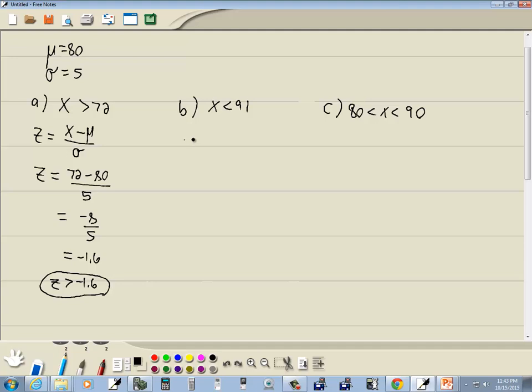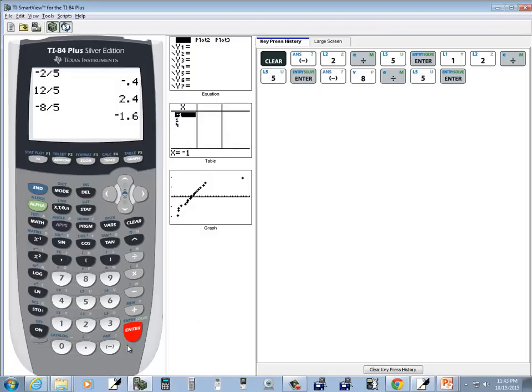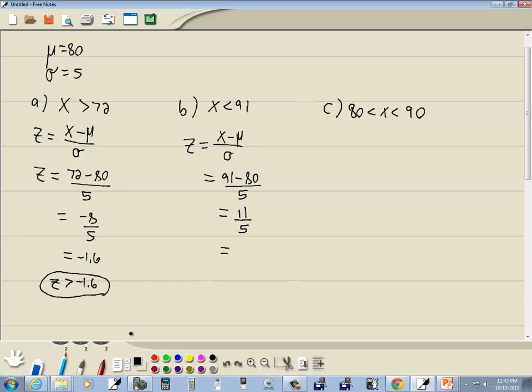Now do the same thing with the 91. Again, we're going to use the formula z is equal to x minus mu over sigma. x is 91 minus mu, which is 80, over sigma, which is 5. 91 minus 80 is 11 over 5, which I think is 2.2, but let's see. So the x is less than 91 becomes z is less than 2.2. And that's our answer.